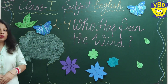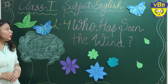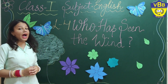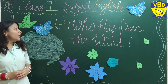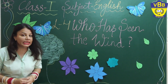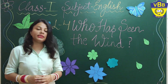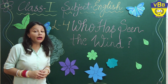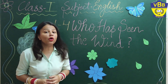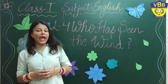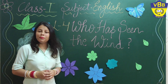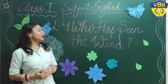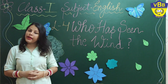We are going to start a new lesson — lesson number 4, which is a poem. The name of the poem is 'Who Has Seen the Wind?' I repeat: the name of the poem is 'Who Has Seen the Wind?' Before moving forward, can anybody tell me what is the meaning of the word 'wind'?